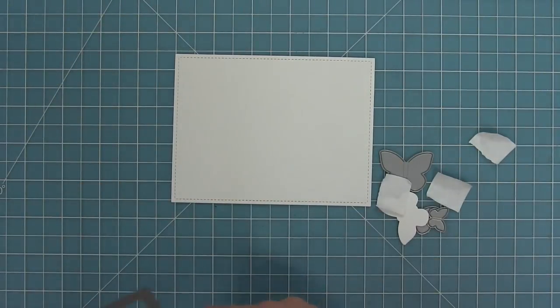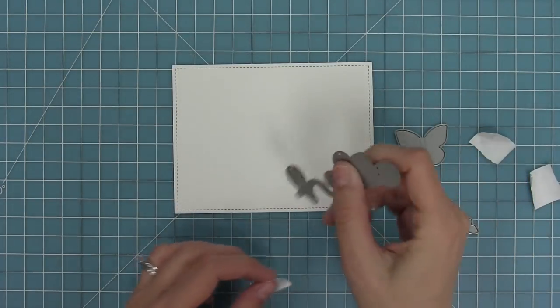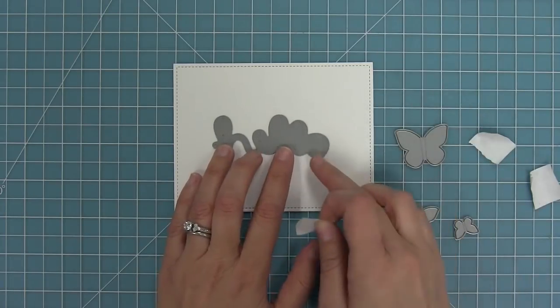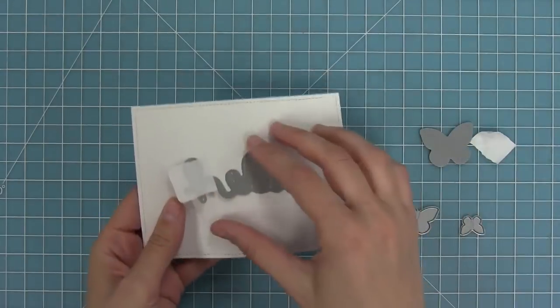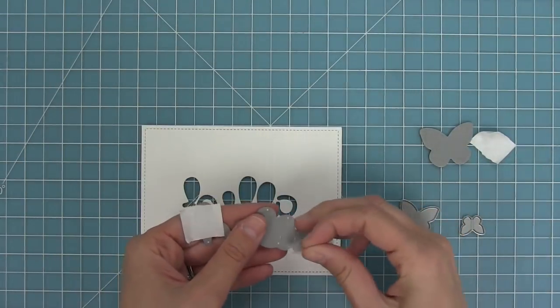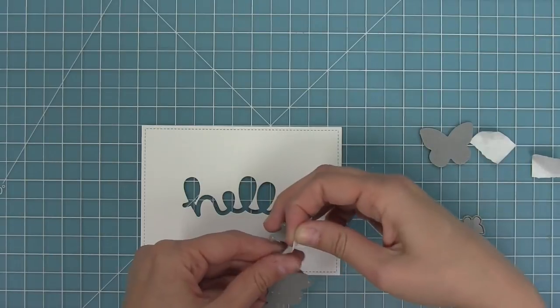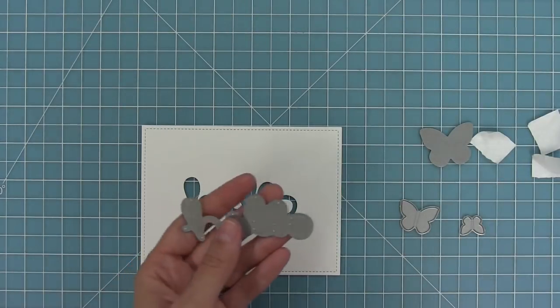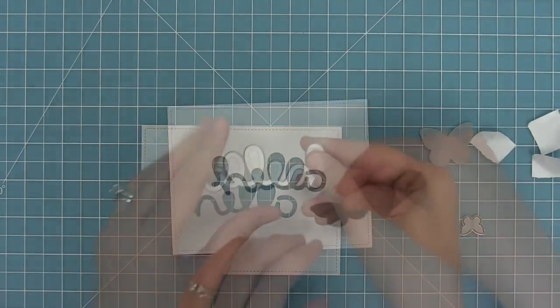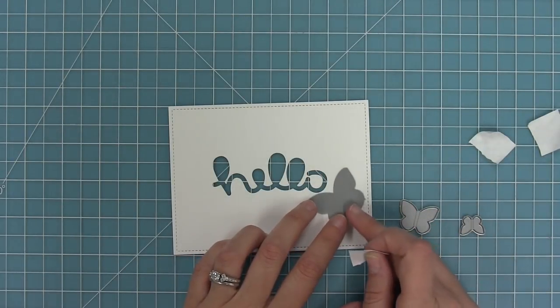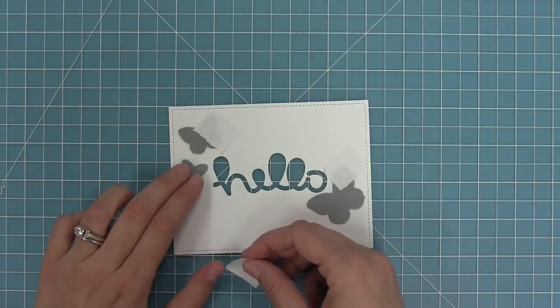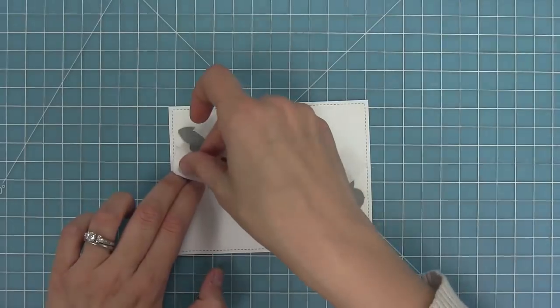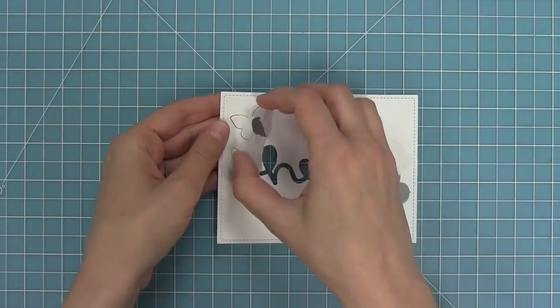Here I've die cut some cardstock with the largest outside in stitched rectangle. I have our scripty hello die and I'm going to put that about in the center of the cardstock. I'll use my post-it note tape to hold it in place then run it through my die cut machine. I have some pieces stuck in the die. I'm going to leave those in the die for now because we're going to be using those pieces later on. Now I'm going to take that first style of butterfly, the one that die cuts from the cardstock but still leaves the butterfly attached, and I'm going to put butterflies surrounding this hello.